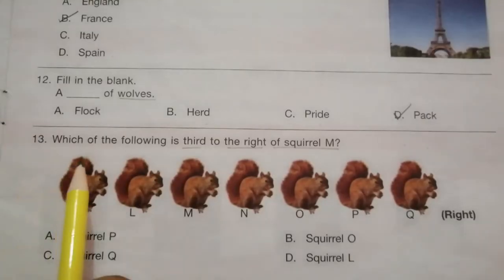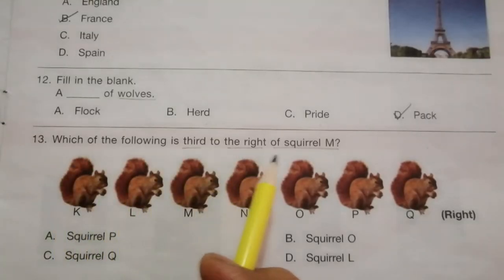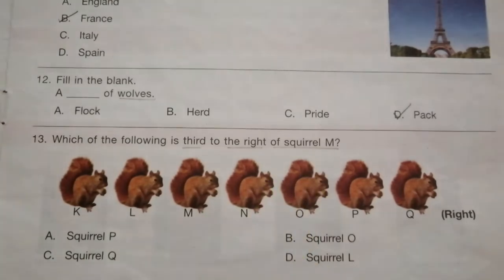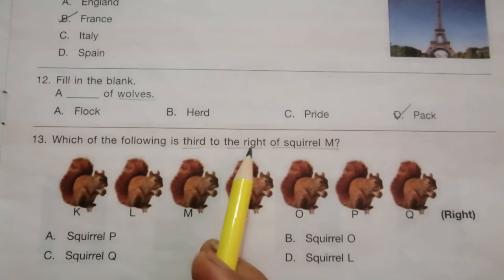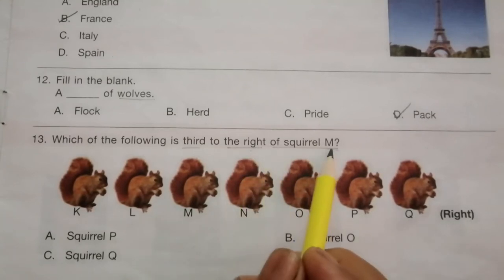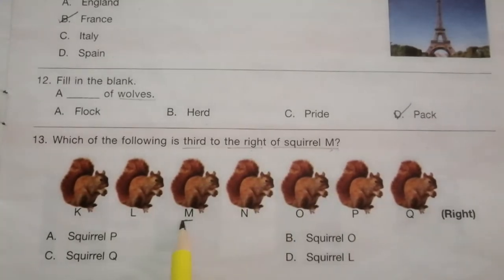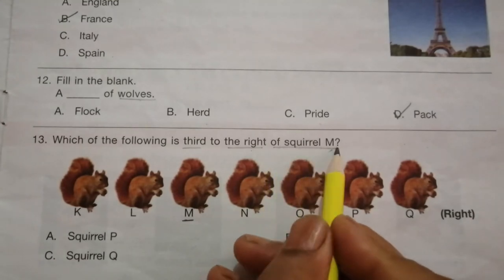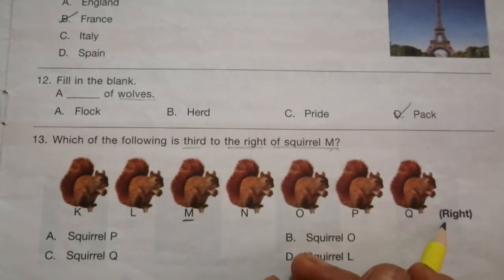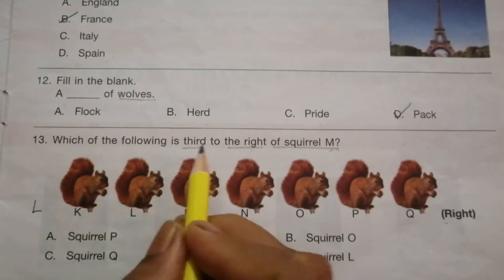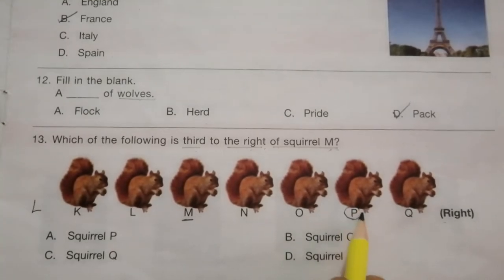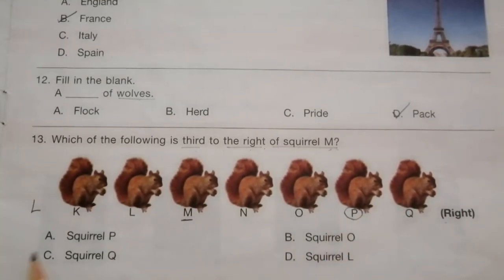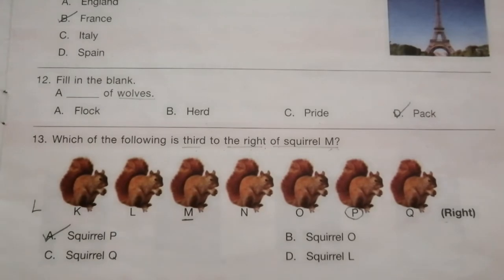Question 13: Which of the following is to the right of the squirrel? In this type of question we answer from the right side. Third to the right of the squirrel — one, two, three — so the answer is A, squirrel B.